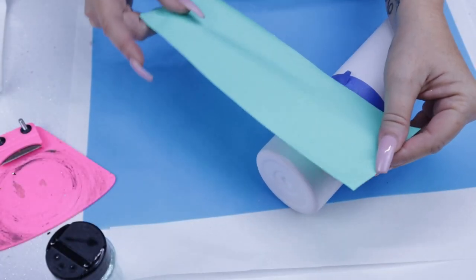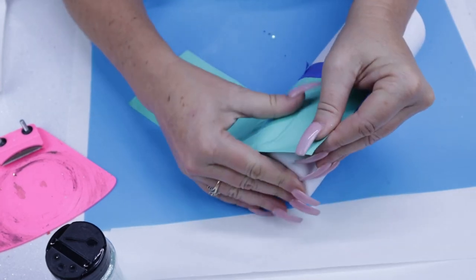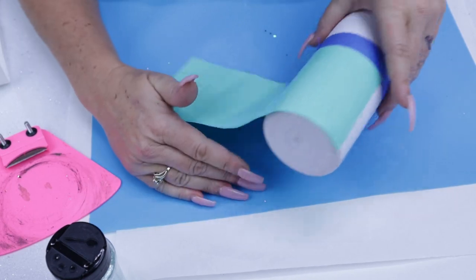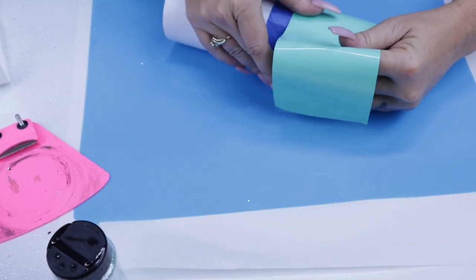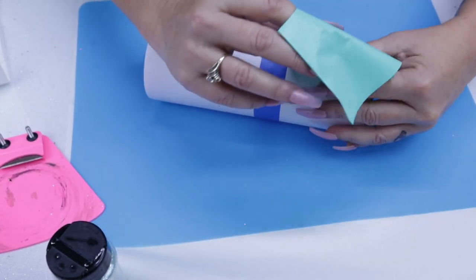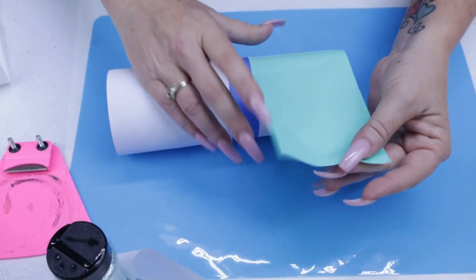As you can see, I went ahead and removed the entire backing because I'm working with a small amount of vinyl on a small section of the tumbler. Just when wrapping it around, make sure that you keep all the air pockets and wrinkles out as best as you can.